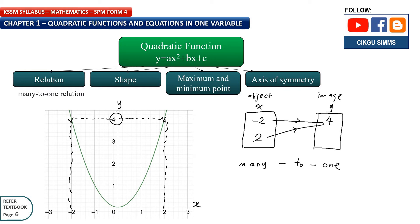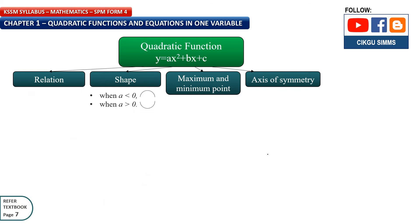This is a many-to-one relation. So that's the meaning. Now we move on to the second thing: the shape of the graph.